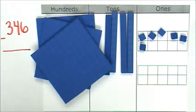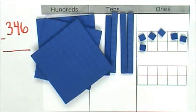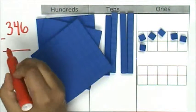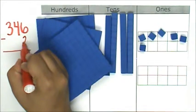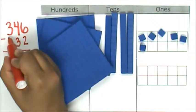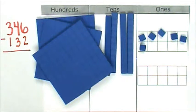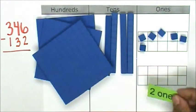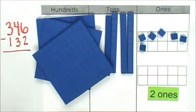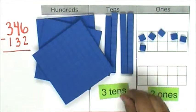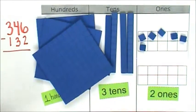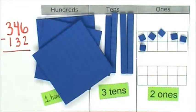Next, I will use number cards to show the value of the number I'm subtracting. I'm subtracting 132. 132 is composed of 2 ones, 3 tens, and 1 hundred.